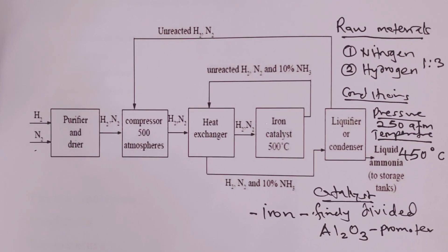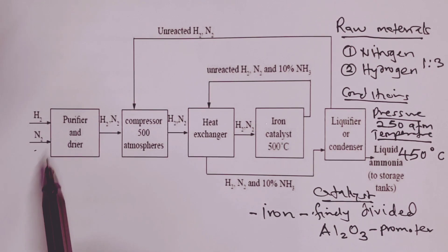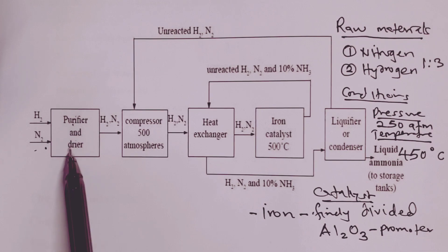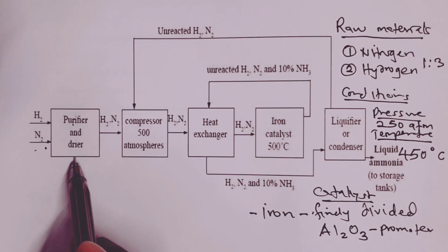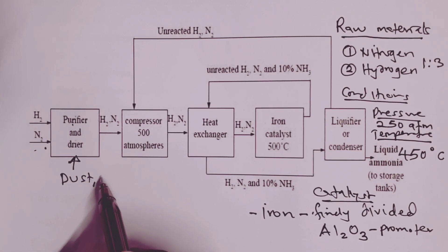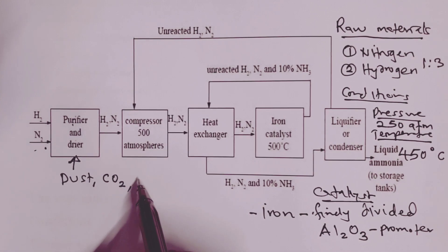So the two raw materials are getting in through this point. We purify and dry them. The purpose of doing this is to prevent poisoning of our catalyst eventually in the catalytic chamber. So, what do we remove in the purifier? The dryer obviously removes moisture in our mixture, but the purifier would remove dust. The purifier would remove carbon dioxide. The purifier would remove sulfur dioxide. We may also have gases like oxygen being removed and even argon at the purifier.